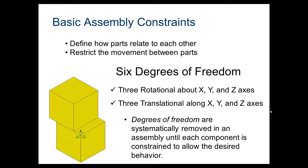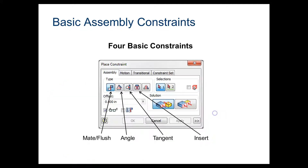So, basic assembly constraints. This is what defines how parts relate to each other and restricts the movement between parts. There's something known as six degrees of freedom — three rotational axes about the X, Y, and Z axes. The degrees of freedom are systematically removed in assembly until each component is constrained to allow the desired behavior. There are four basic constraints: mate, angle, tangent, and insert.